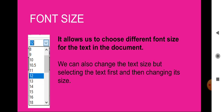The next option is font size. It allows us to choose a different font size for the text in the document. You can apply a font size from the list or enter a size manually. The default font size in OpenOffice Writer is 12.